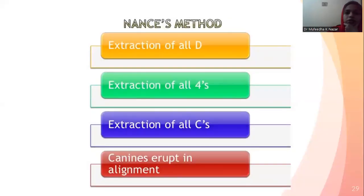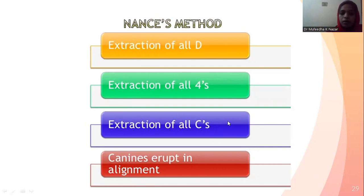Nance method: Nance's method is actually the same as Tweed's method. It involves extraction of all first primary molars, followed by extraction of all first permanent premolars, then followed by extraction of all primary canines, after which the canines erupt into proper alignment.